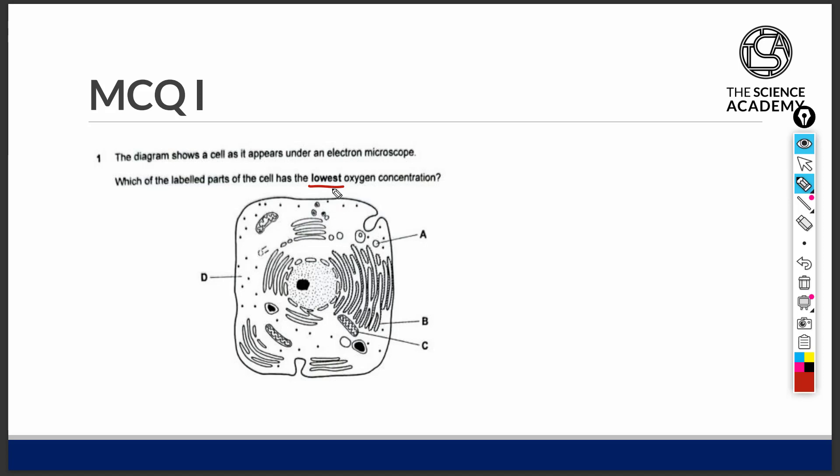Let's start by naming all the organelles that are labeled in this diagram. A refers to a vesicle, B refers to the rough endoplasmic reticulum, or specifically the ribosomes that are attached onto the surface of the RER.